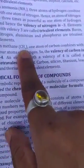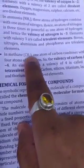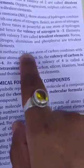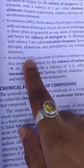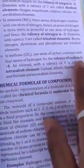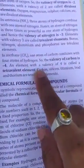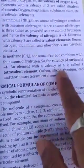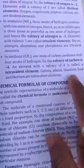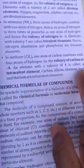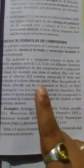Similarly, in methane CH4, one carbon joins with four hydrogens, so the valency of carbon is four, that is minus four. It is called tetravalent. Carbon, silicon, titanium, lead, thorium are tetravalent elements.